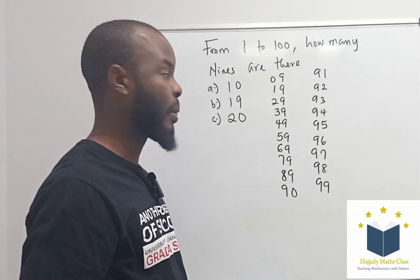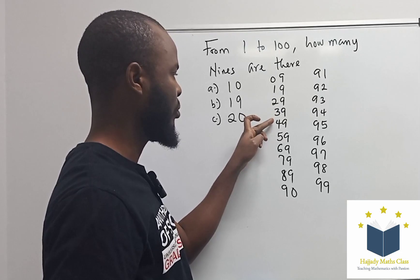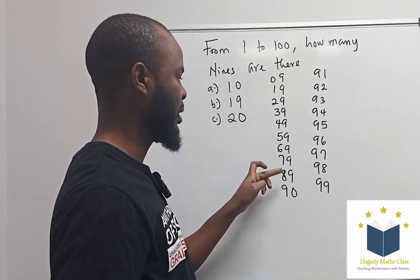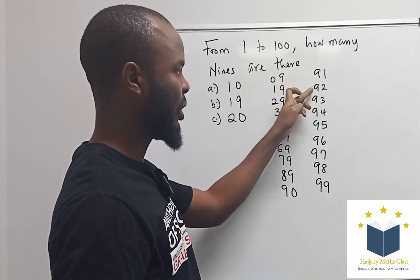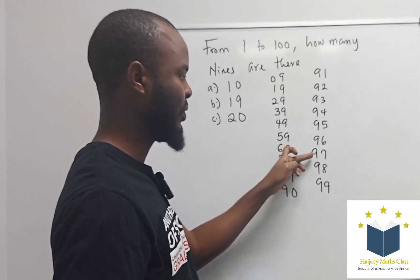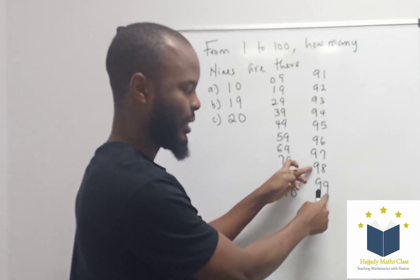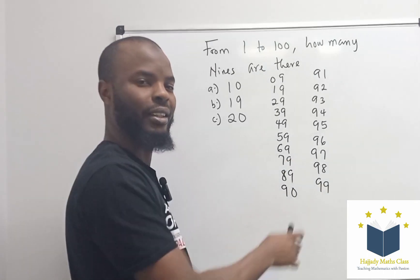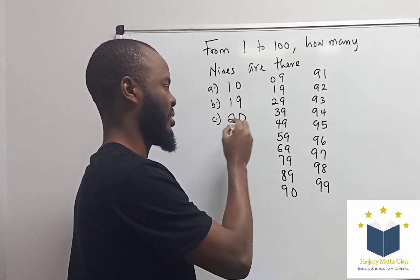Let's count: 1, 2, 3, 4, 5, 6, 7, 8, 9, 10, 11, 12, 13, 14, 15, 16, 17, 18, 19, 20. So the answer is option C.